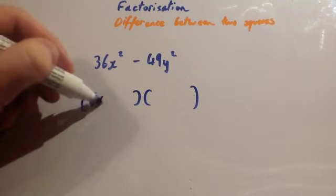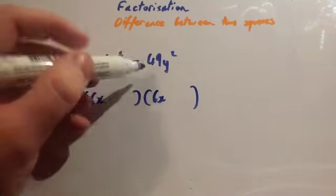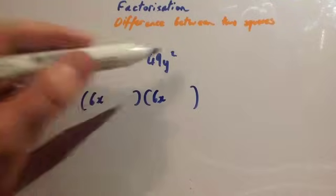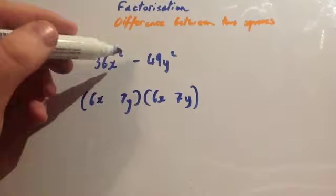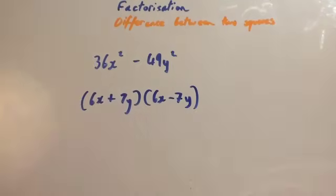The square root of 49y² would be 7y. And you put one with a plus sign and one with a minus sign, and that's it. Difference between two squares, you've factorized it: (6x + 7y)(6x - 7y).